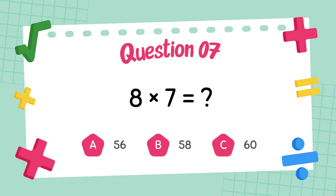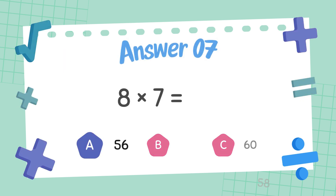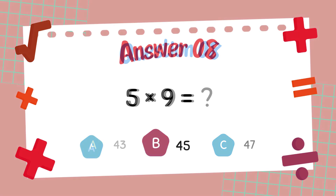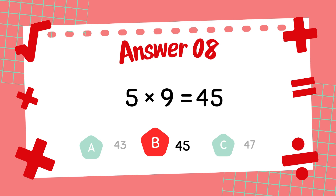What is 8 times 7? The answer is 56. What is 5 times 9? The answer is 45.